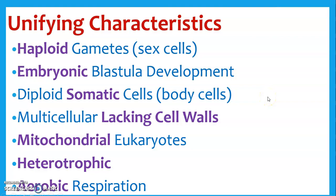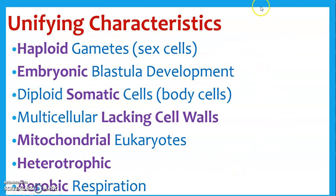So what puts everything into the animal kingdom? You basically reproduce using gamete sex cells — so sperm and egg. The body cells are diploid. We don't have cell walls — mushrooms and plants have cell walls, but that sponge does not. We're eukaryotes, and we get our energy through a heterotrophic process, usually aerobic respiration. All that stuff — if you have those characteristics, that would fit you into the animal kingdom. And that's basically what you'd need to know for the test.